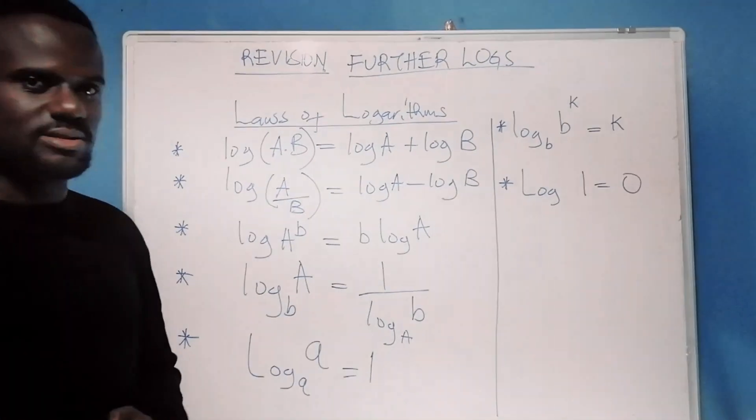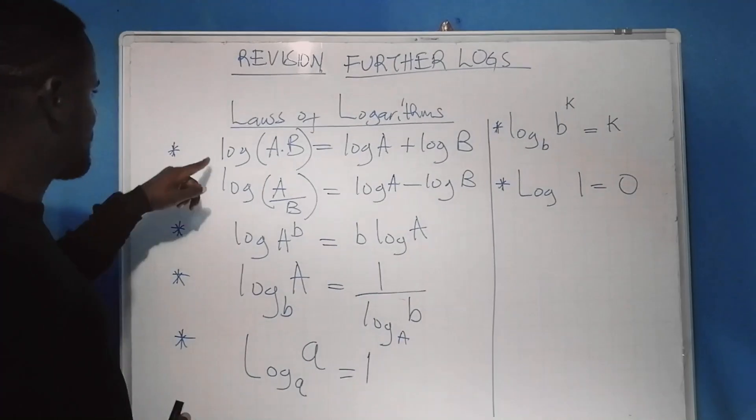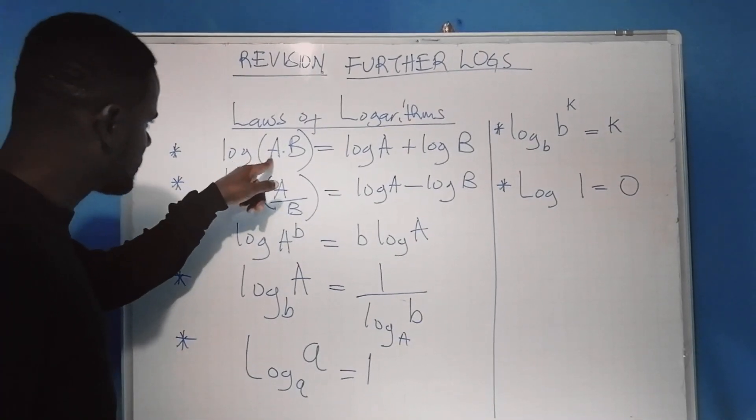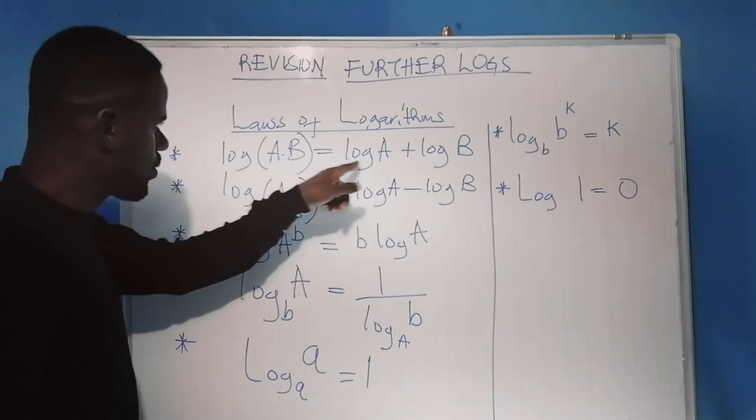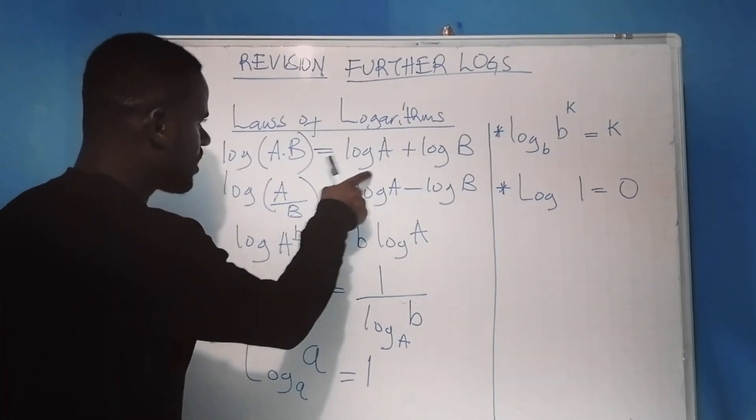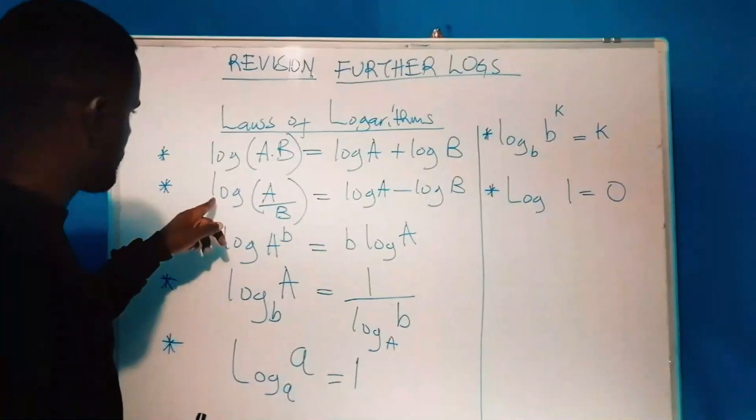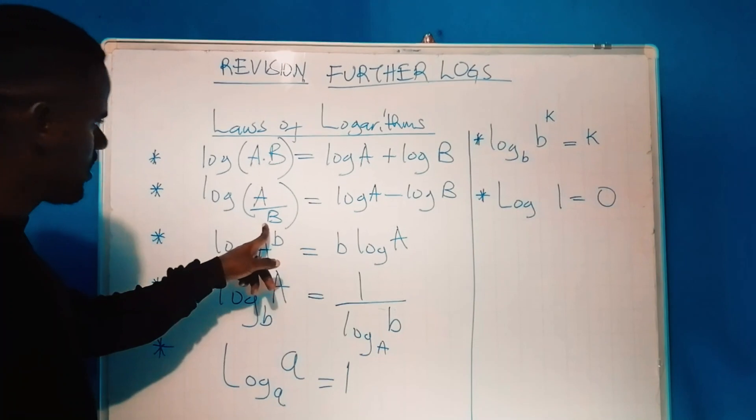The first law simply states that the log of a times b is equivalent to log of a plus log of b. The log of a divided by b